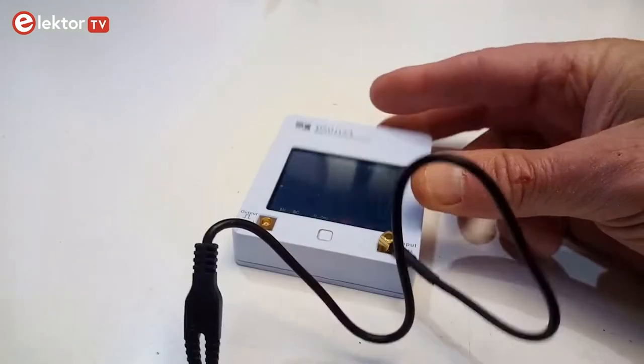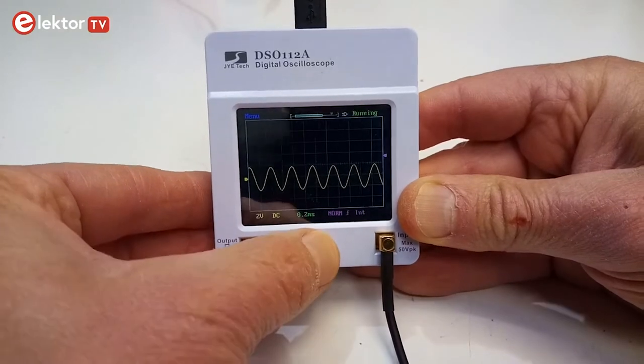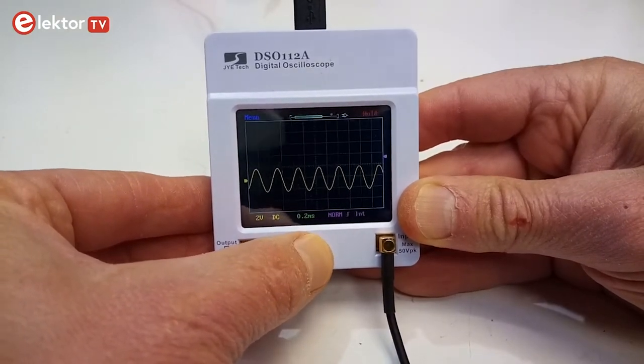I like my oscilloscope to stay where it is when I pull a test lead, and it must have knobs and buttons that I can find quickly. An oscilloscope without knobs for the horizontal and vertical axis is not a real oscilloscope.